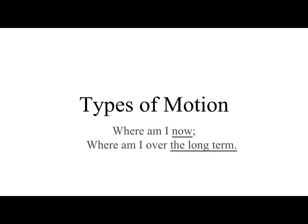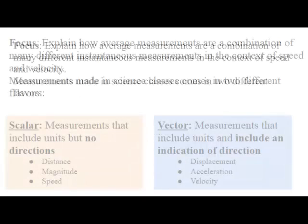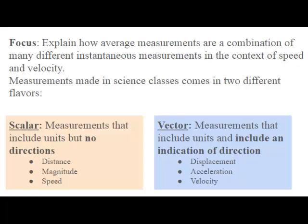In this lecture on Types of Motion, we're discussing where am I now and where am I over the long term. By the end of this lecture, I hope you can explain how average measurements are simply a combination of many different instantaneous measurements and be able to describe it in the context of speed or velocity and know what the difference is.